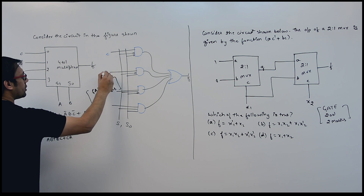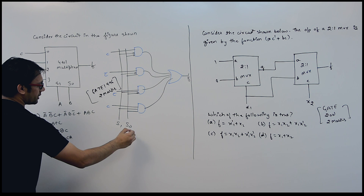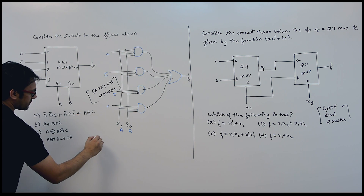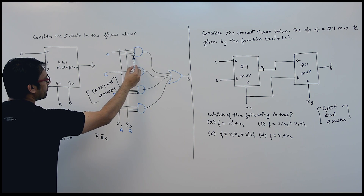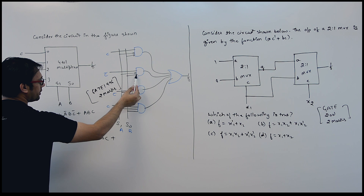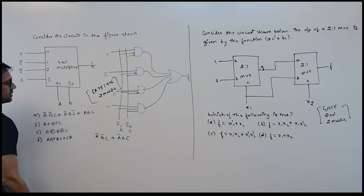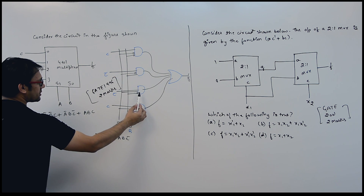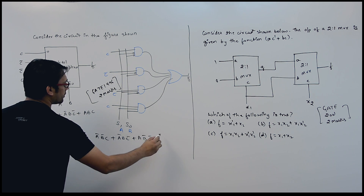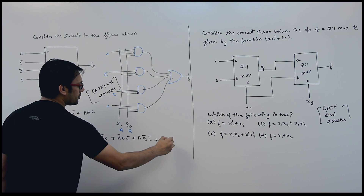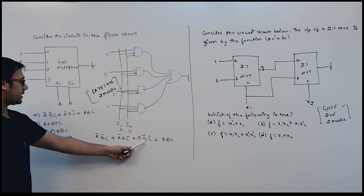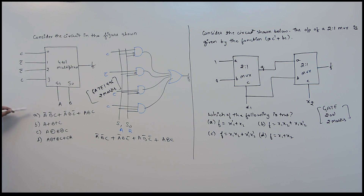If I am giving C here, C complement here, again C complement here, and C here, and if I am giving B here and A here — the equation for the first AND gate will be A complement B complement C. Plus A complement B and C complement. Plus A B complement C complement. Plus A B and C.